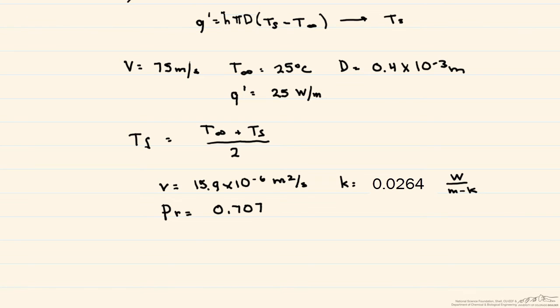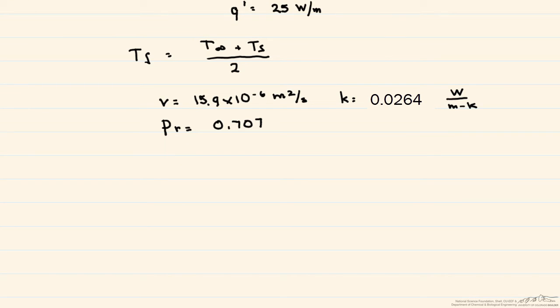So let's start by calculating our Reynolds number. So the Reynolds number is equal to the velocity times the diameter divided by that kinematic viscosity. So that's 1,887.